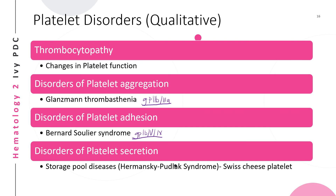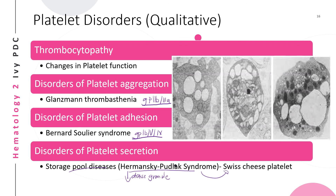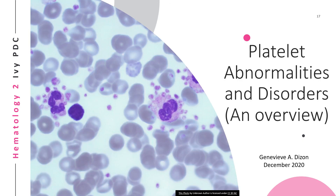The last disorder is a disorder of platelet secretion. An example is Hermansky-Pudlak syndrome, where there is a profound deficiency of platelet dense granules. In Hermansky-Pudlak syndrome, platelets have a morphologic characteristic described as the 'Swiss cheese platelet,' as seen in the pictures.